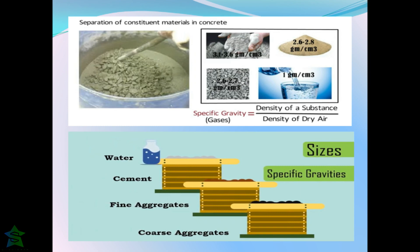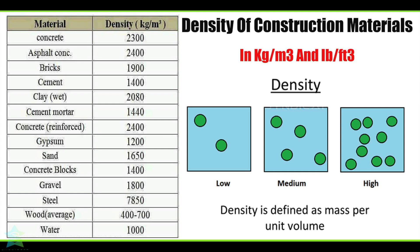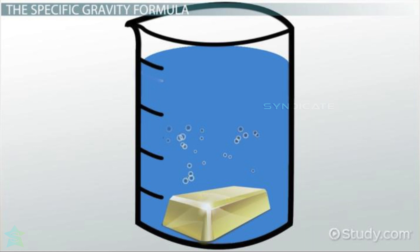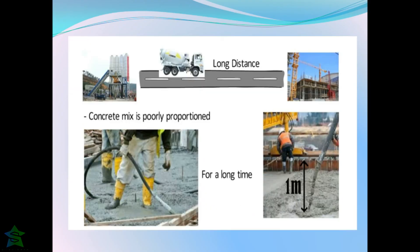Materials with high density have more weight, which tends to pull them down when compared to materials with low density. Coarse aggregates are the materials having the highest density when compared to fine aggregates and cement. Therefore, fine aggregate and cement slurry stays at the top whereas coarse aggregates tend to move down.